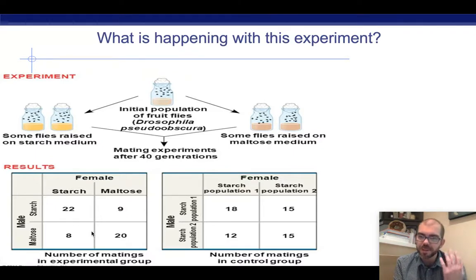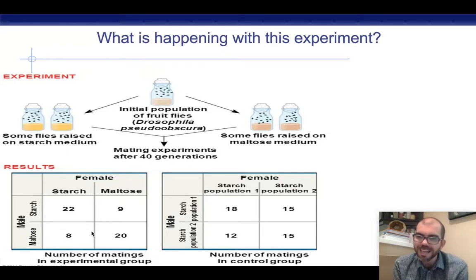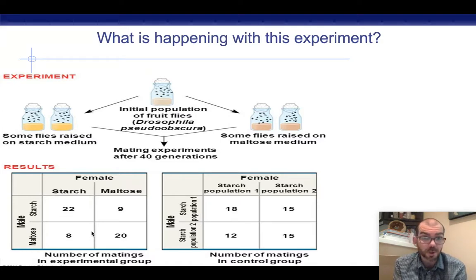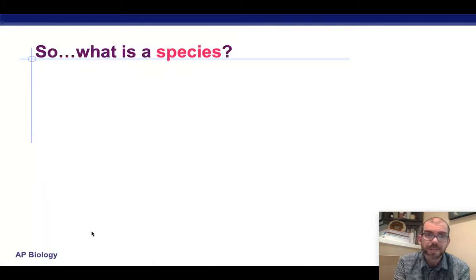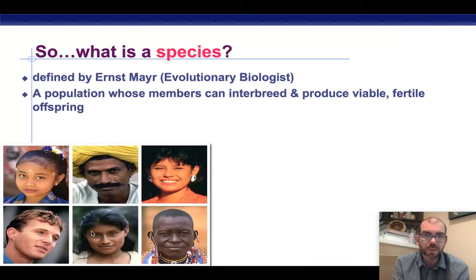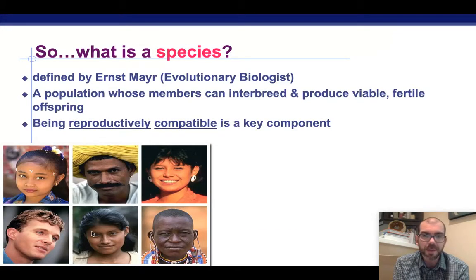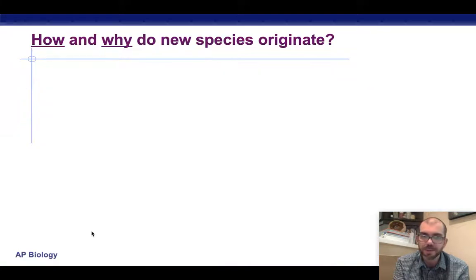If you remember from the Five Fingers of evolution, non-random mating — if there's a mating preference, that can lead to a new species. This experiment conclusively proved, in a very short amount of time — only 40 generations of flies — that a new species can develop with something as small as a preference for food. So we're going to work with the definition that a species is a population whose members can interbreed and produce viable offspring.